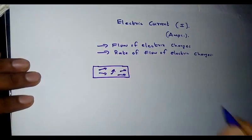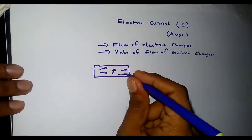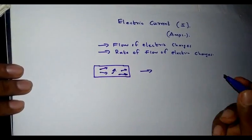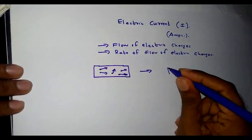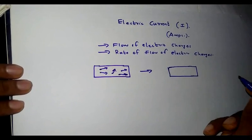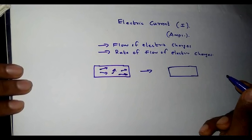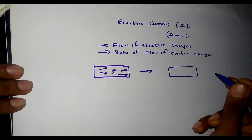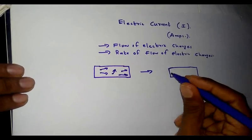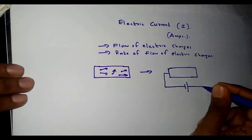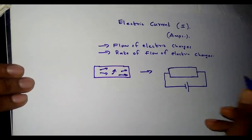They are moving in any direction. When we apply an electric pressure or electric potential across the same piece of conductor which consists of free electrons, the free electrons, which are negatively charged particles, will start moving towards the positive terminal of the battery.